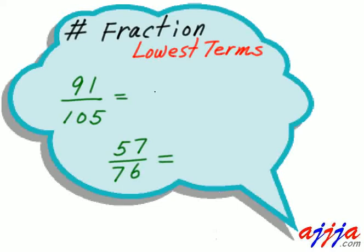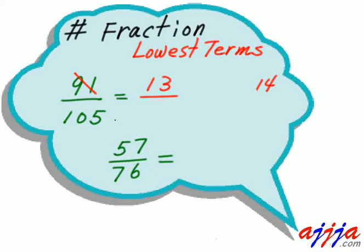Let's try ninety-one over one-oh-five. No idea — looks so heavy. Subtract: one-oh-five minus ninety-one is fourteen, and fourteen means two times seven, so maybe seven. Seven goes into ninety-one thirteen times. What about seven into one-oh-five? Seven goes one time, then thirty-five divided by seven — that's fifteen. So the answer is thirteen over fifteen.